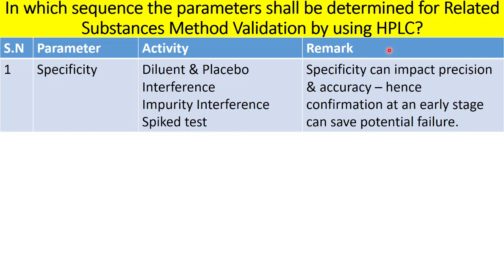As part of specificity, you are supposed to conduct diluent interference. In case you are performing validation for a drug product, you also have to consider placebo interference. The third activity is impurity interference. The fourth is to understand whether there are any resolution issues when you spike the impurities into the sample — that is the spiked test study. These are the four different activities as part of specificity.